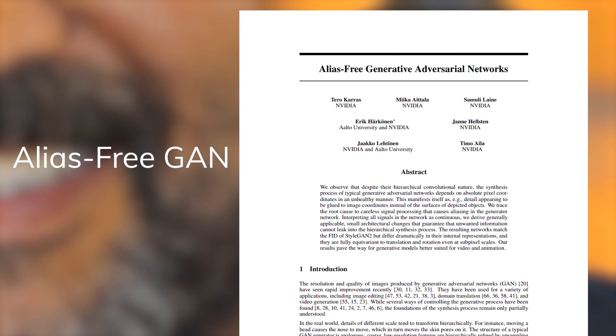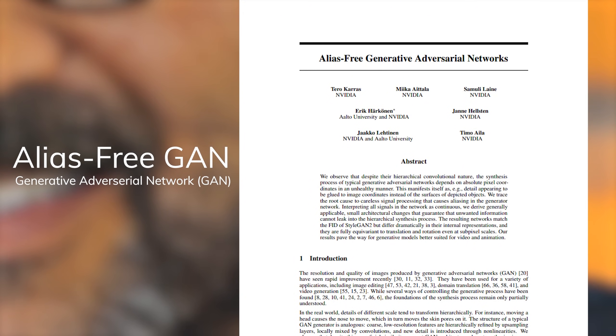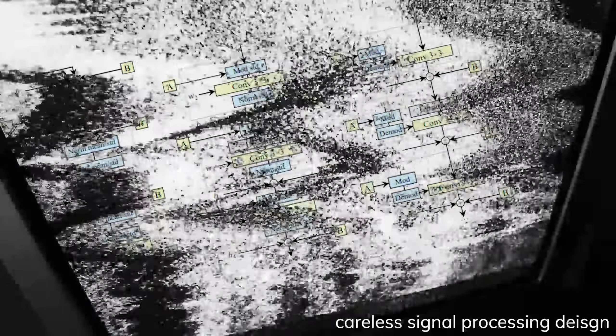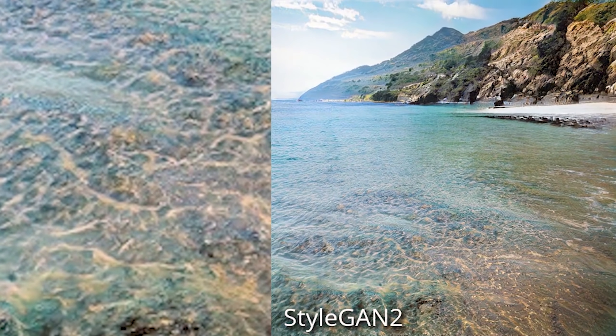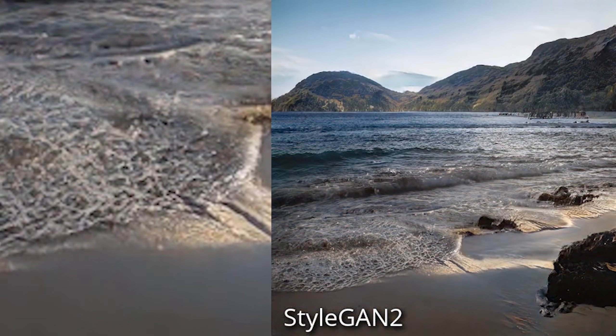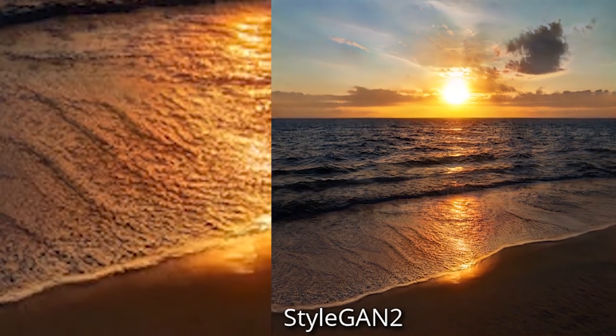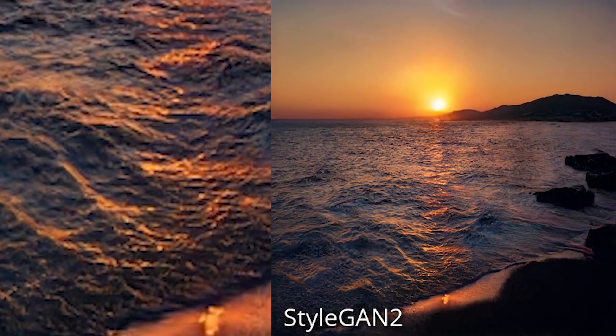This issue was identified and fixed by the same makers of StyleGAN and StyleGAN2, who then proposed a new improved paper called Alias-FreeGAN. GAN is the current most prominent AI architecture used for synthesizing and generating images and videos. It was because they found out it's the careless signal processing design that causes aliasing in the generator, which then leaked some unwanted information into the synthesis process, giving unintentional positional references — coordinates to the intermediate layers. That small amount of aliasing was amplified over the network and became fixed positions, so the textures appeared glued onto the screen.